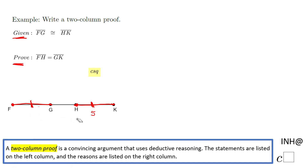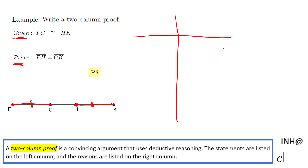Obviously these are not specifically 5 and 3, so let's do the two-column proof. In a two-column proof, you have two columns. On the left column, you're going to put statements, and on the right column, you're going to put reasons.